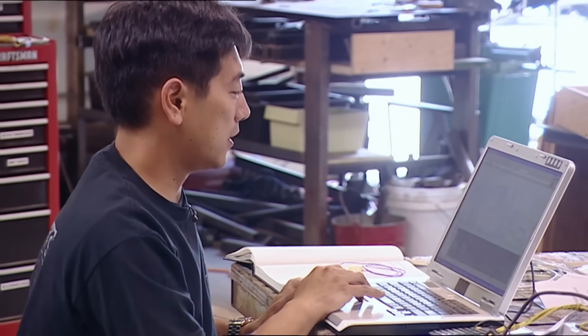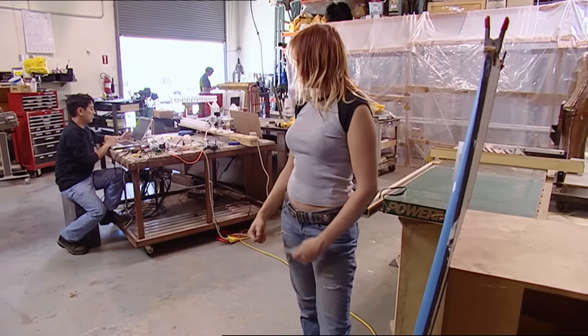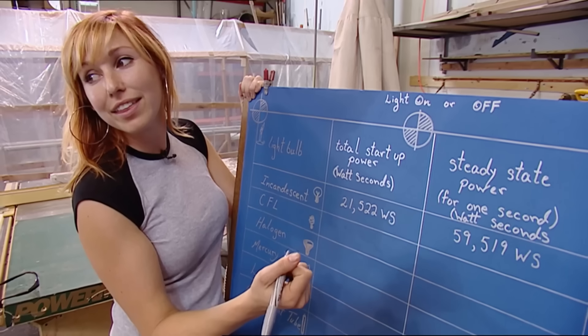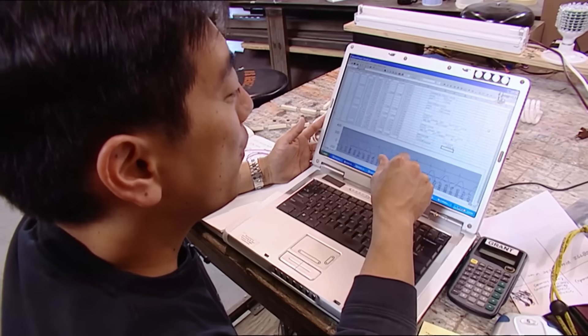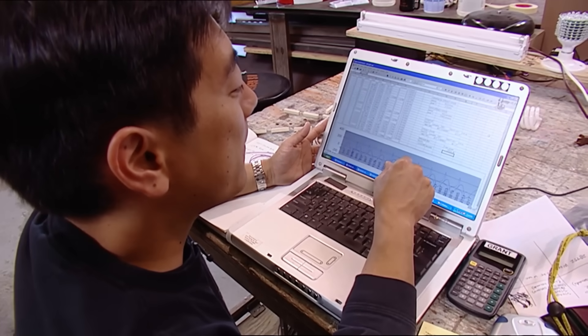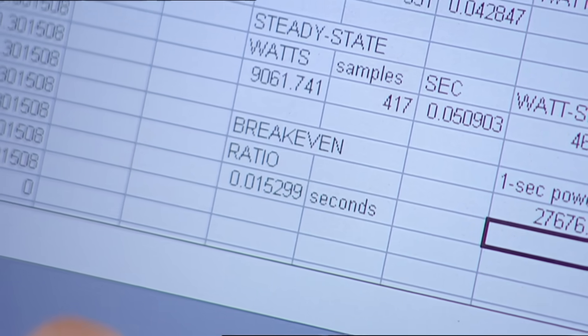Stand by for the next. Grant keeps plugging away and soon has the results for the other five bulbs. And they all conform to this pattern. Okay, I got the compact fluorescent figures, 0.015 seconds, faster than you can blink your eye.